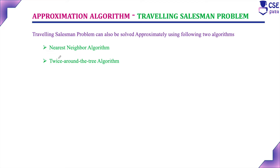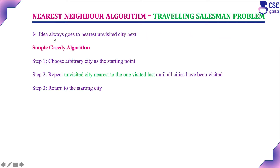Combinatorial problems are usually very difficult to solve to get an exact solution. The traveling salesman problem can also be solved approximately using two algorithms: the nearest neighbor algorithm and the twice-around-the-tree algorithm. In this session, we will discuss the nearest neighbor algorithm. The idea of the nearest neighbor algorithm is it always goes to the nearest unvisited city next.